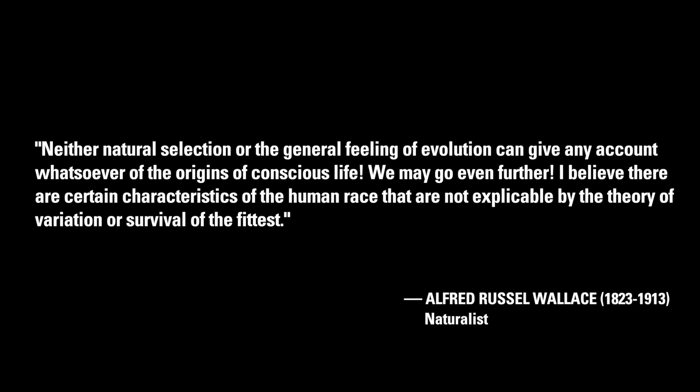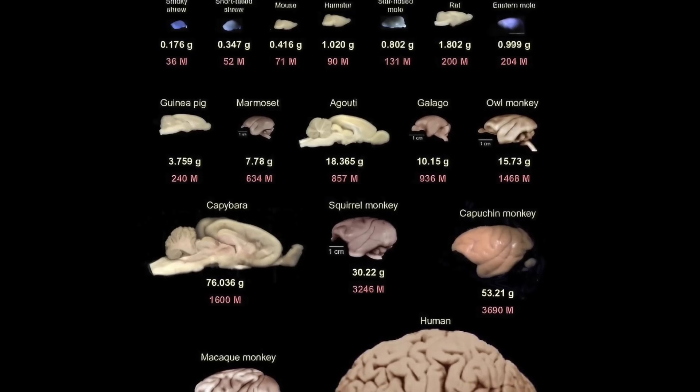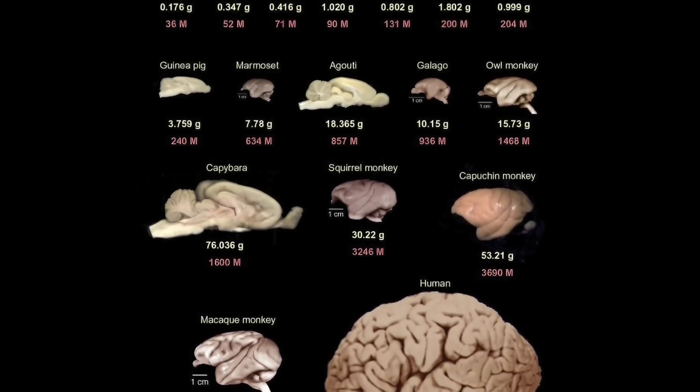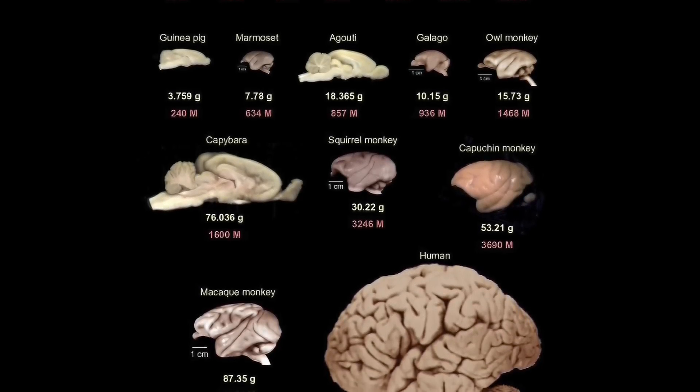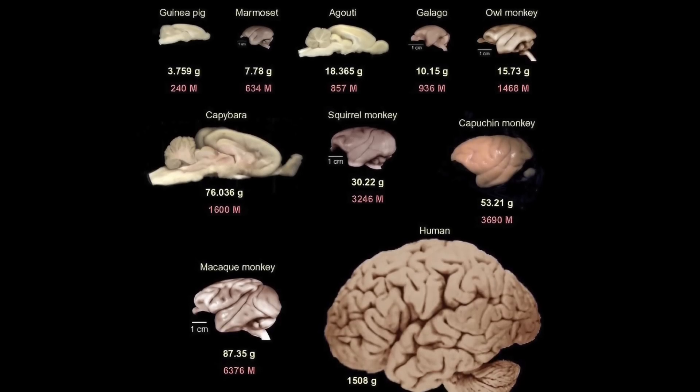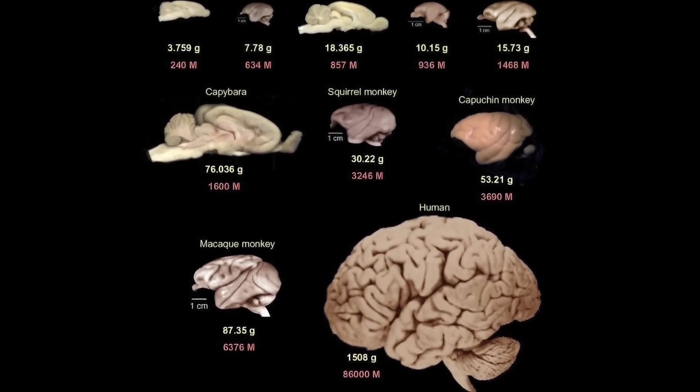To quote Wallace: 'Neither natural selection nor the general theory of evolution can give any account whatsoever of the origins of conscious life. We may go even further. I believe there are certain characteristics of the human race that are not explicable by the theory of variation or survival of the fittest.' Thus, according to Wallace, to produce such exquisite features as the human brain, evolution required guidance in what he called an overruling intelligence.